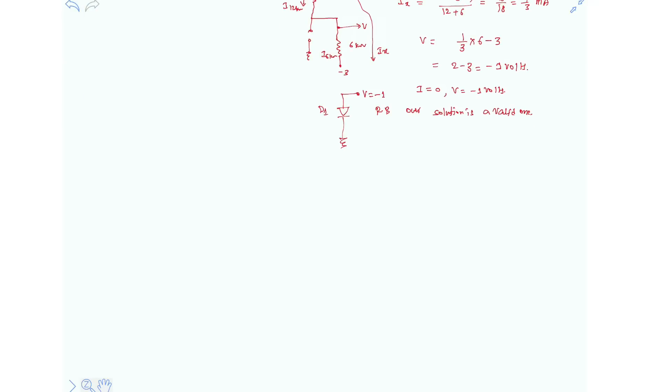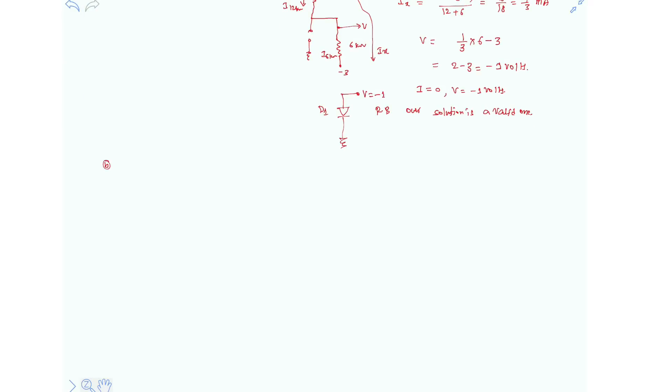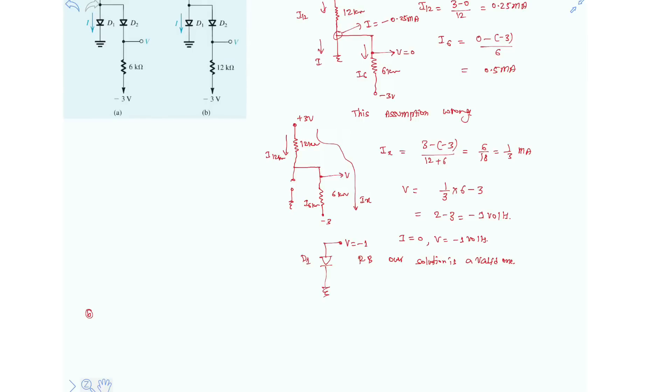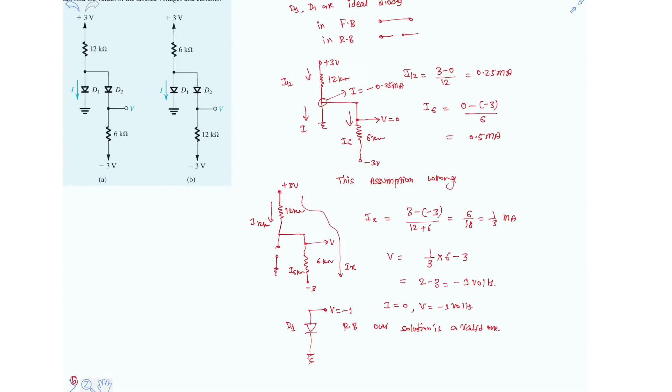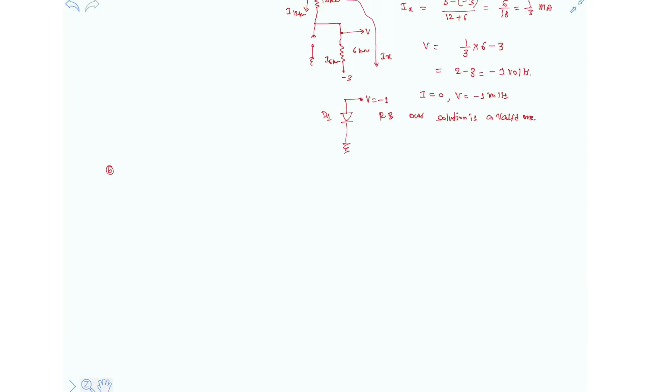And now, let's solve question B. This is also the same, D1 and D2 are connected in the same version as question A. And the only difference is the resistors are interchanged. So let's assume both the diodes are forward bias.